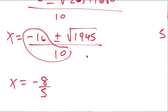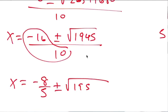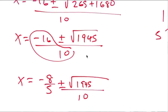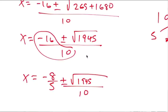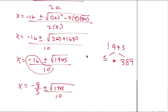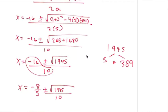We can reduce this. So x equals negative 8 over 5 plus or minus the square root of 195 over 10. Hmm, I hope I did everything right.